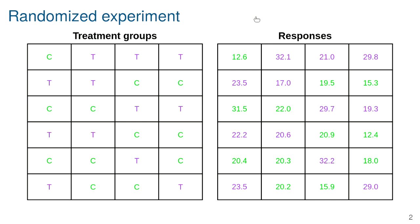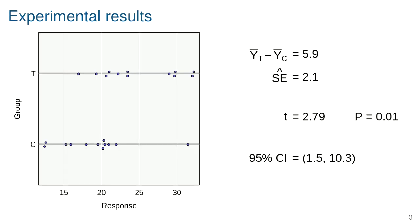The usual sort of analysis of these kinds of data would be to do a t-test. There's a plot of those data — the 12 responses for the treatment group and the 12 responses for the control group. The difference between the average for the treatment group and the average for the control is about 6, with a standard error of about 2, so the t statistic is about 2.8. Comparing that to the t distribution with 22 degrees of freedom gives a p-value of about 0.01, and a confidence interval for the difference ranging from 1.5 to about 10.